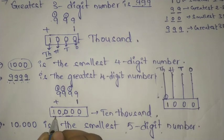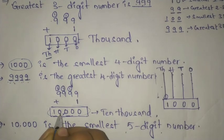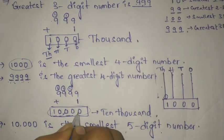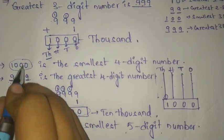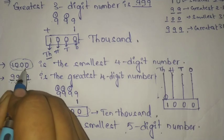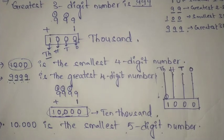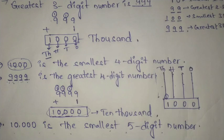If we add one to 9999, we get 10,000. This 10,000 is the smallest five digit number. 10,000 has four zeros, and thousand has only three zeros.